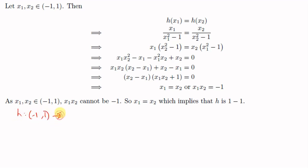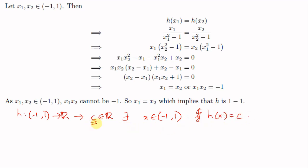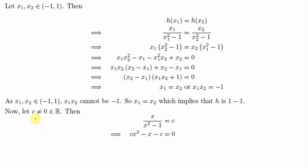Now we check whether h from (-1,1) to ℝ is onto. To show this, for any c ∈ ℝ we need to find an x ∈ (-1,1) such that h(x) = c. Take any real number c. First consider the case c ≠ 0: h(x) = c implies x/(x²-1) = c, and cross-multiplying gives cx² - x - c = 0.